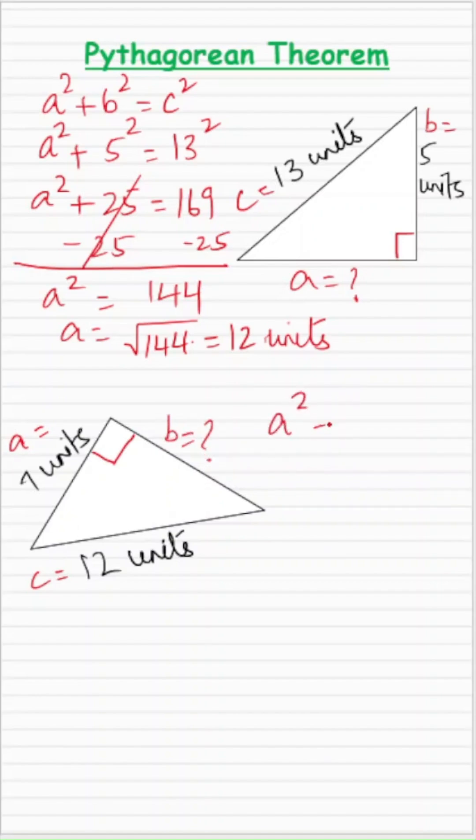Let's start with the Pythagorean theorem: A² + B² = C². A is 7, B is missing, and C is 12. So 7² is 49, and 12² is 144. 49 + B² = 144.